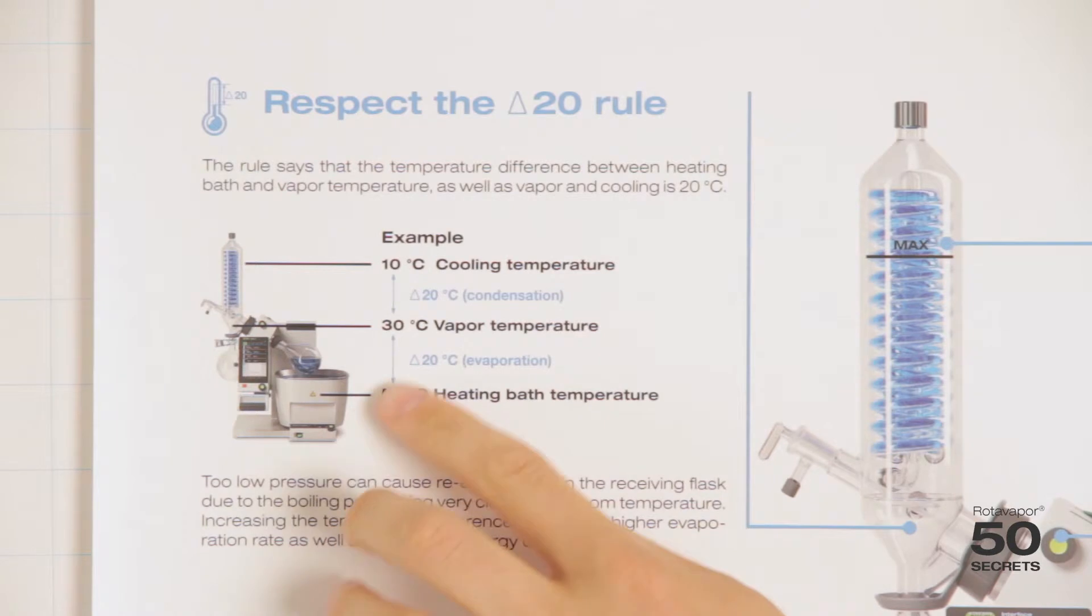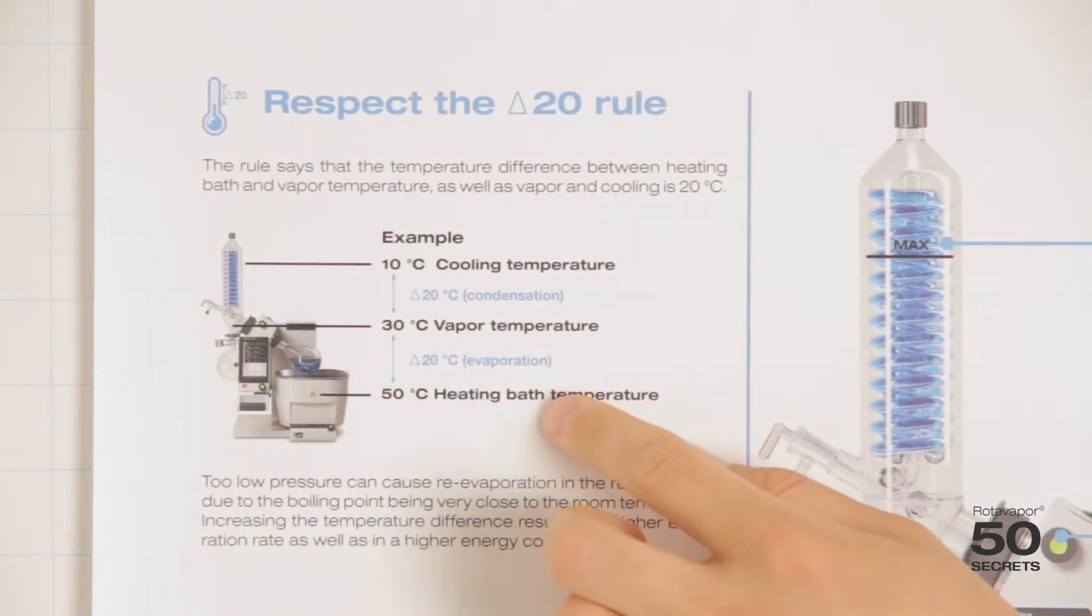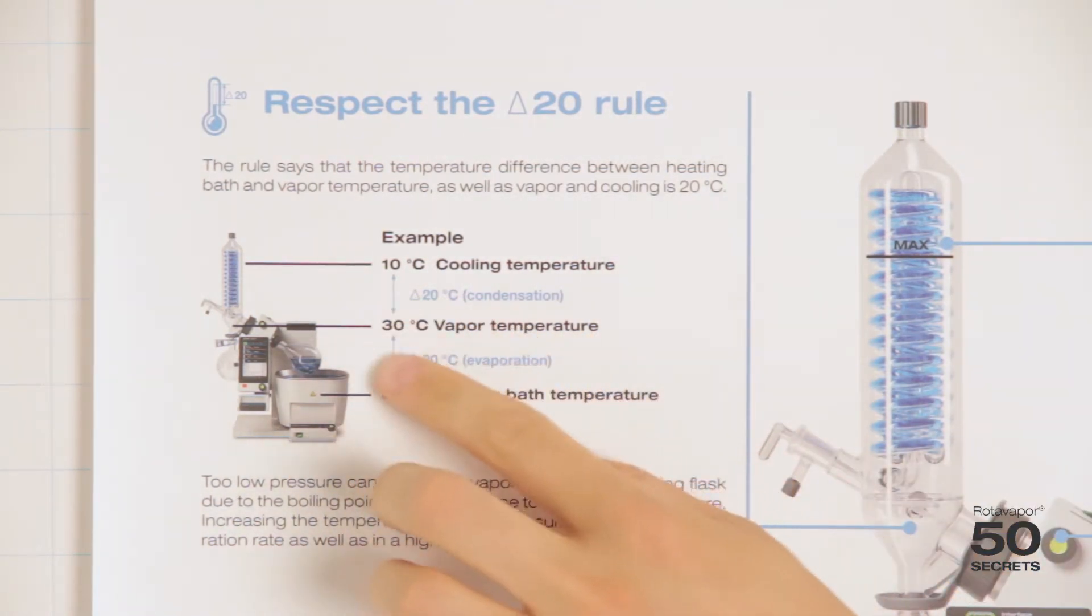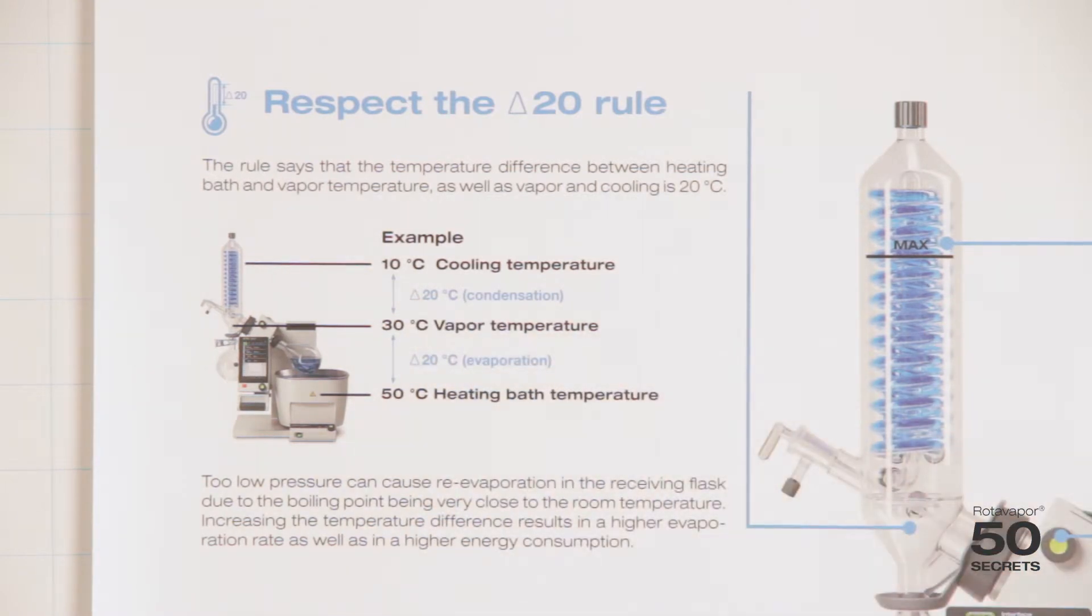As an example, we start with 50 degrees heating bath temperature, 30 degrees vapor temperature, and 10 degrees cooling temperature. The rule of thumb is usually that you try to adjust the vapor temperature to whatever is needed.